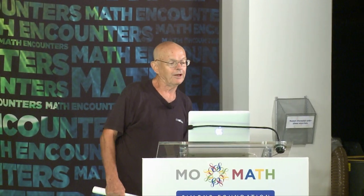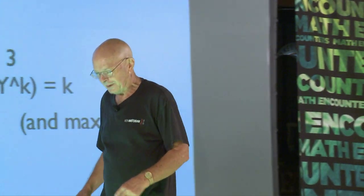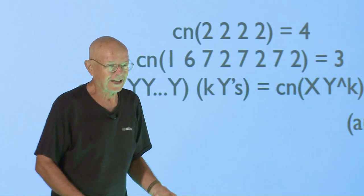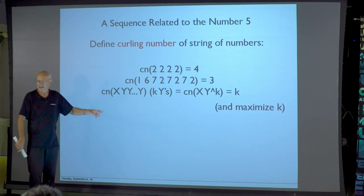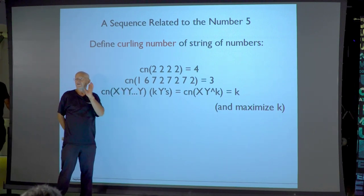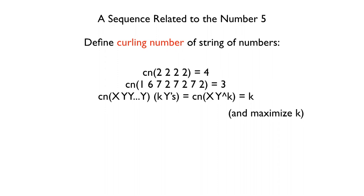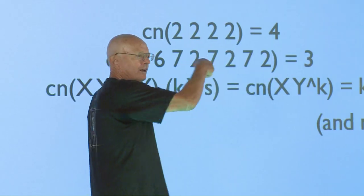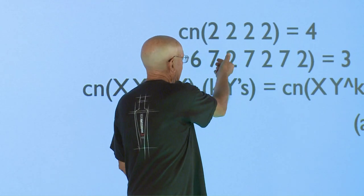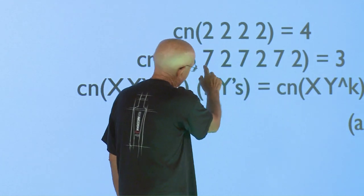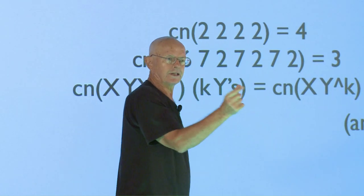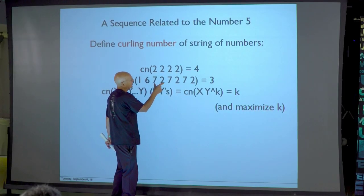So that's my story about the number 10. And then I want to mention a story about the number 5, which I was involved with personally. I have to tell you what a curling number is. So if you look at the sequence 2, 2, 2, 2 — that's got 4 copies of 2 — it has curling number 4. The curling number is the number of times you get an identical string at the end. So if I took the example 1, 6, 7, 2, 7, 2, 7, 2 — that's got curling number 3 because it ends with 3 copies of 7, 2.